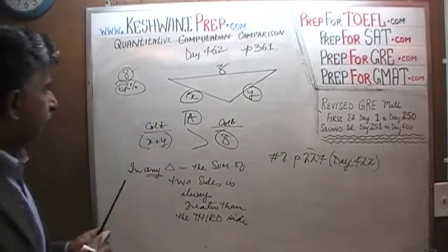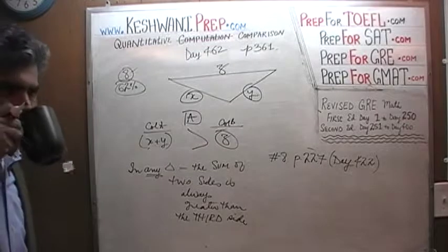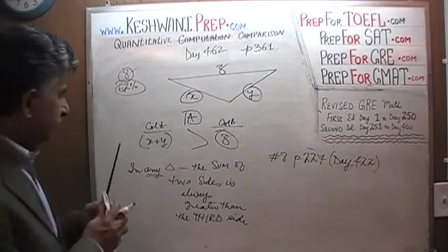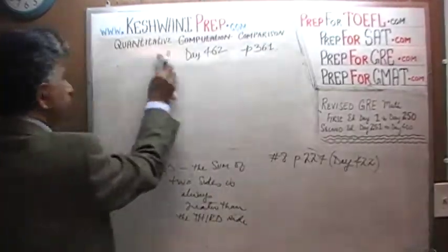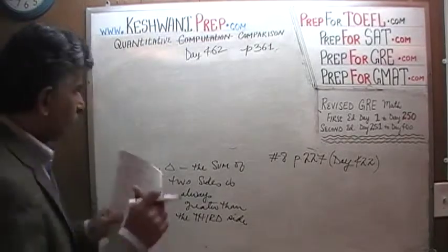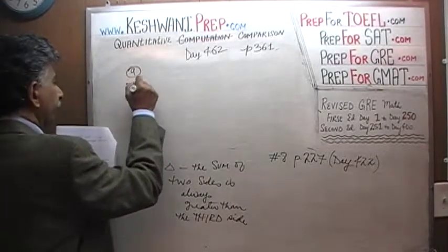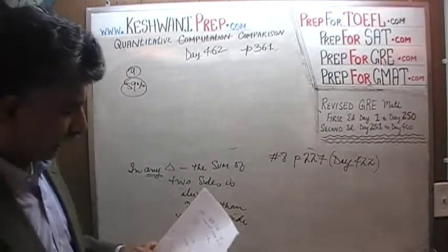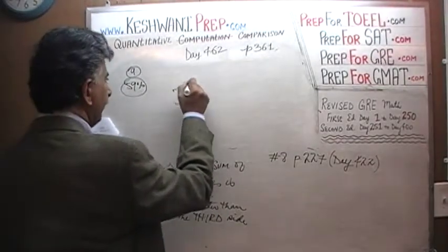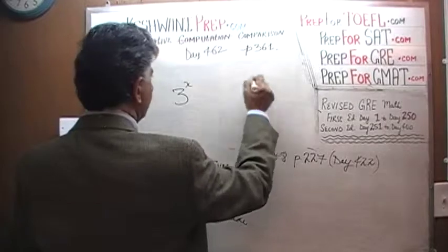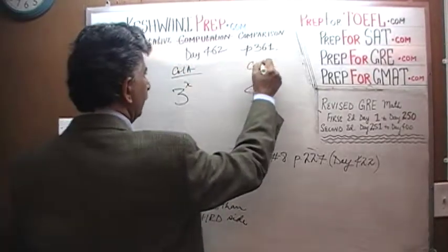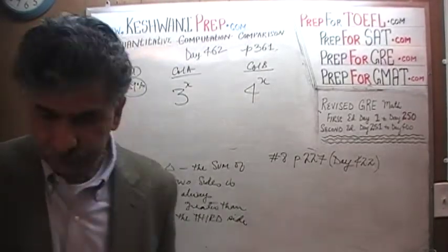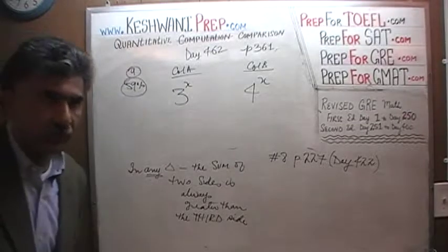Question number 9. When it appeared in the exam, 59% of the people had no trouble with it — about three-fifths got it right. What you are being asked to compare is 3 raised to x versus 4 raised to x. That is all — there is nothing else given. I'll give you a few seconds to pause and unpause the video to do the problem yourself.